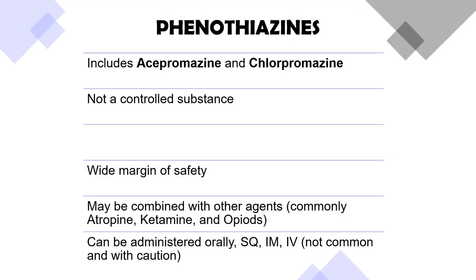Phenothiazines include acepromazine and chlorpromazine. They are not a controlled substance — unlike other pre-anesthetic agents, they are not controlled by the government for abuse or addiction potential. They may be combined with other agents such as atropine (an anticholinergic), ketamine (a dissociative anesthetic), and opioids (an analgesic). They can be administered orally, subcutaneously, IM, or IV, though IV is not common and should be used with caution.